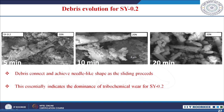Investigating debris formation as a function of time: initially there is surface fracture and the debris are very small in size. As time is extended, these smaller debris connect to each other and form long cylindrical debris, achieving a needle-like shape as sliding proceeds. This essentially indicates the dominance of the tribochemical layer and its removal observed for silicon carbide ceramics sintered with very small amounts of yttrium oxide.